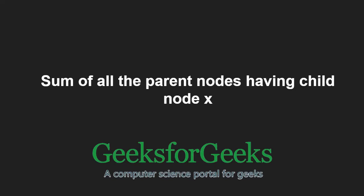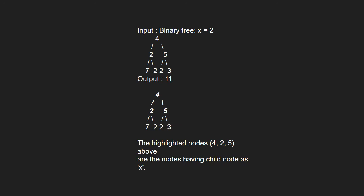Let us take an example. For input x equal to 2, the nodes 4, 2 and 5 are the parent nodes having child node x, and the sum will be 4 plus 2 plus 5, that is 11.